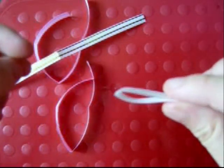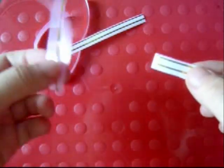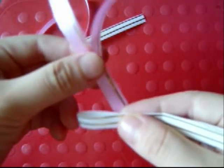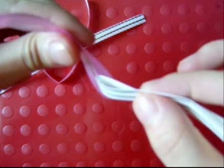Take one ribbon, hold it like this, take the other color and put this inside that loop.